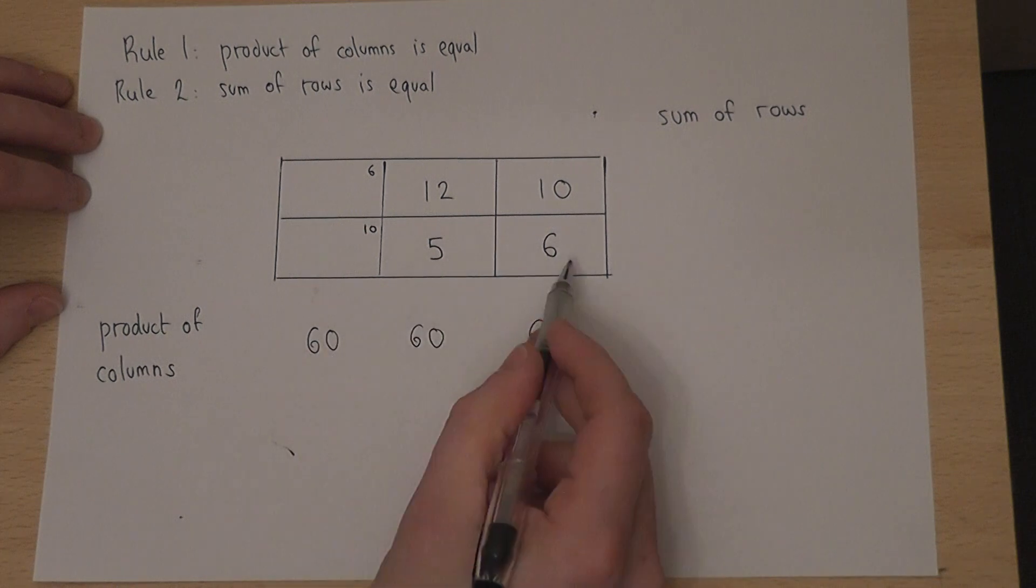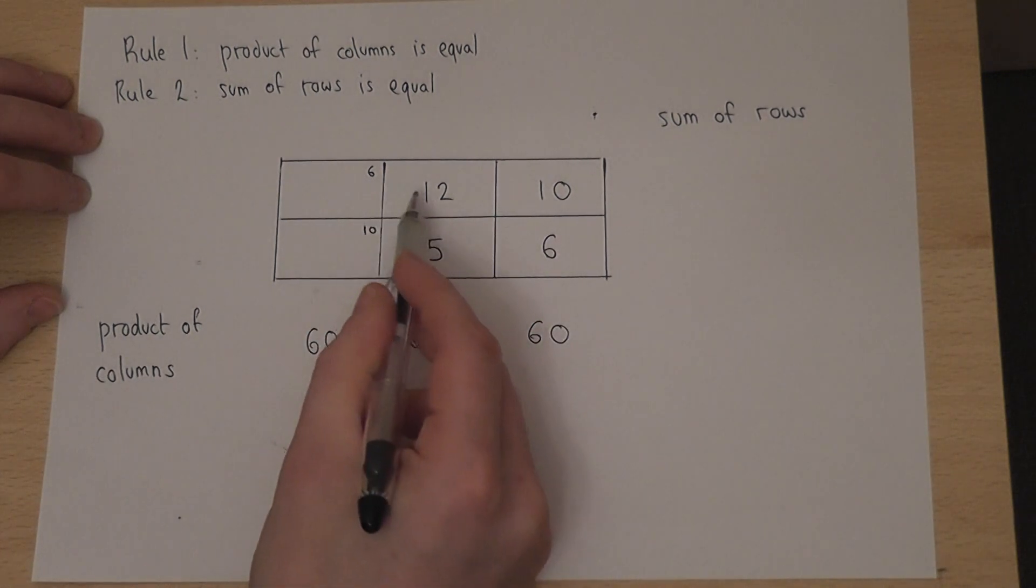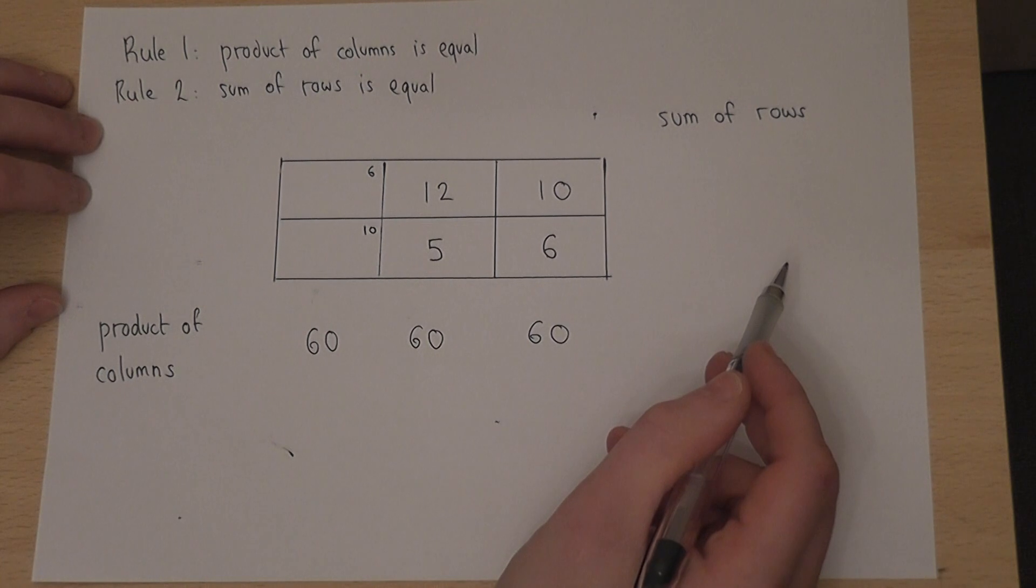Now 10 plus 5 plus 6 is 21, so 6 plus 12 and 10 is not 21. So that doesn't work.